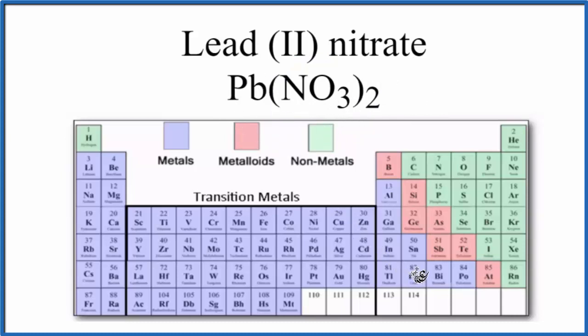That's because when we look at lead here, lead is a metal, and then nitrogen and oxygen are non-metals. So we have a metal plus non-metals. When we have a metal plus non-metals, we have an ionic compound.